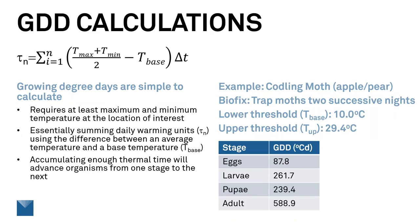In any presentation we have to have the obligatory equation. This equation simply says what I just described in the previous slide. Thermal time, tau-n, is the daily summation — where i is just one day. Each day we sum the average temperature — T-max plus T-min divided by 2 — and subtract from that the base temperature. We then multiply that value by delta-T, which is just time, so delta-T equals one day. We keep adding those up every day.